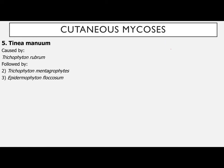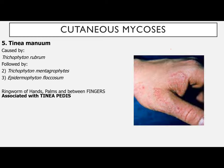Tinea manuum is caused by Trichophyton rubrum, followed by Trichophyton mentagrophytes and Epidermophyton floccosum. This is ringworm of the hands, palms, and between the fingers, and is again associated with tinea pedis — it can spread from the nails and feet to the hands.